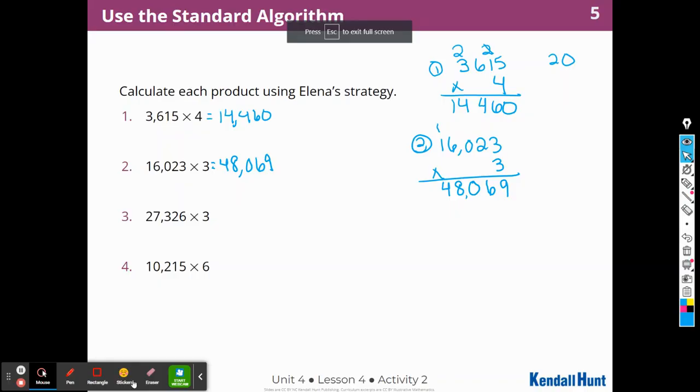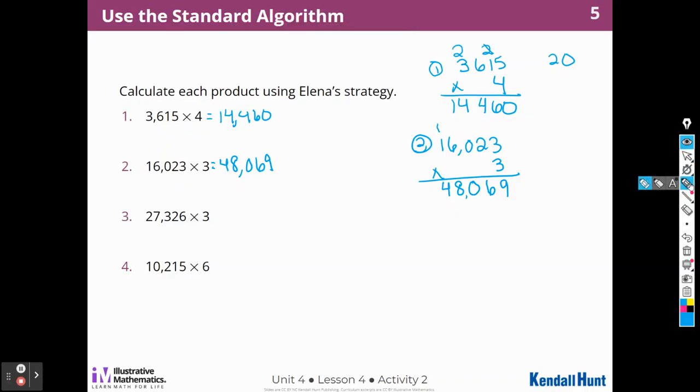Moving right along. So I'm going to continue with number 3. Number 3, I'm going to write my answer here, is 27,326, right? I always have to be careful copying down large numbers. Times 3. So again, 3 times 6 is 18. I'm going to carry that 1 over. 3 times 2 is 6 plus 1 is 7. 3 times 3 is 9. I don't have to carry over anything. I put a comma. 3 times 7 is 21. 3 times 2 is 6 plus 2, 6, 7, 8. So 81,978.